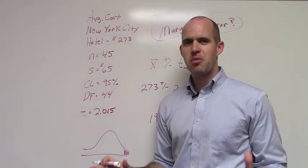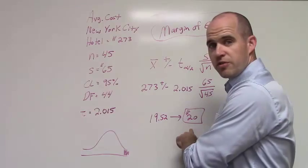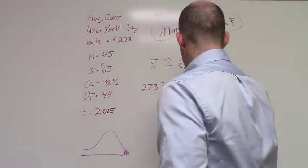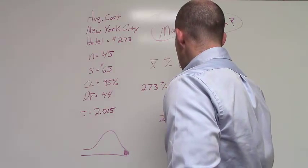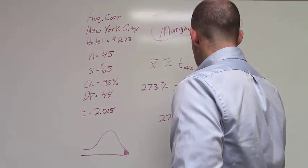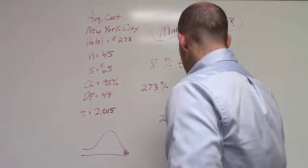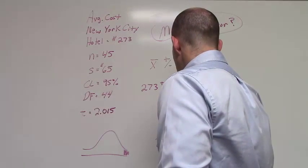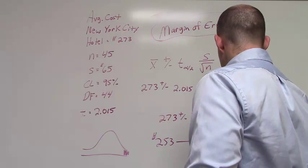Now, this is the most important part of statistics. What did we just find? How do we interpret this particular value? Well, here's how we interpret it. What we found is that the sample mean is 273 plus or minus $20 at a 95% confidence level.